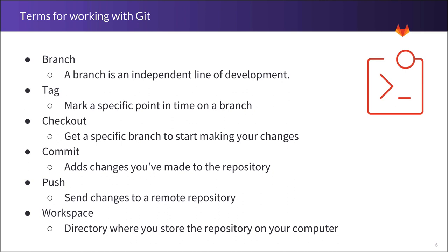First, let's look at some terms for working with Git. A branch is any independent line of development. New commits are recorded in the history for the current branch, which results in taking the source from someone's repository — the place where the history of the work is stored — at a certain point in time, and applying your own changes to it.